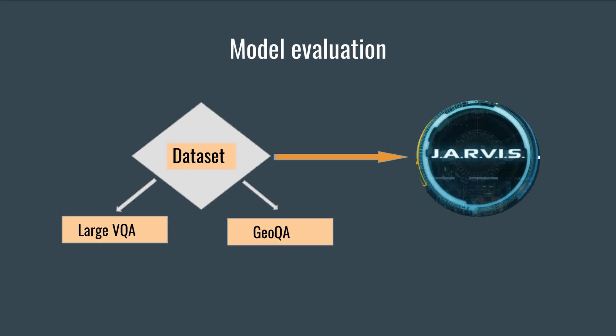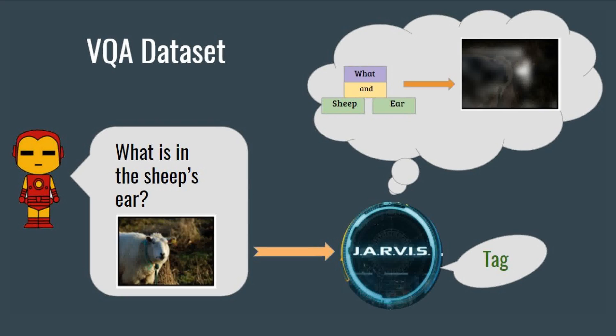The model is evaluated on large visual question answering datasets and a collection of structured geographical questions. Prior knowledge about answers is essential for a VQA task. For example, prior knowledge like 'sheep are white' is needed while answering questions related to sheep.